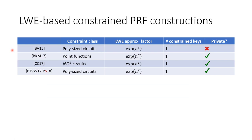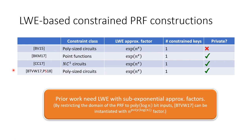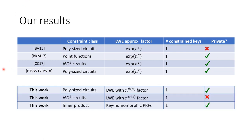After Brakerski and Vaikuntanathan's work, several other papers built private constrained PRFs for different predicates. Boneh and others build private constrained PRFs for point functions; Canetti and Chen build it for NC1 circuits; Brakerski and others and Peikert and myself build it for polynomial-size circuits. However, when supporting polynomially long inputs, all of these constructions need a modulus which is sub-exponential in the dimension. In this work, we build constrained PRFs where the LWE modulus scales much slower — specifically a private constrained PRF for polynomial-size circuits where the modulus is exponential in the depth of the circuit.